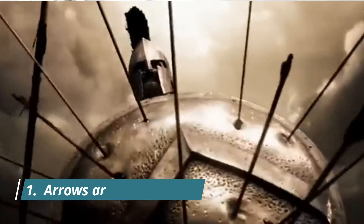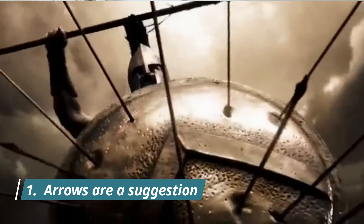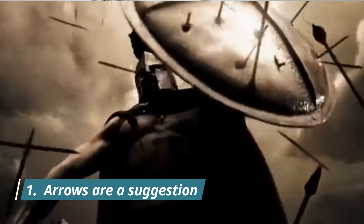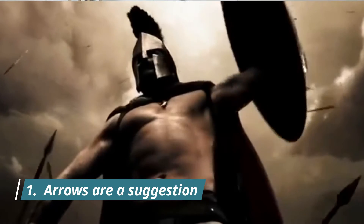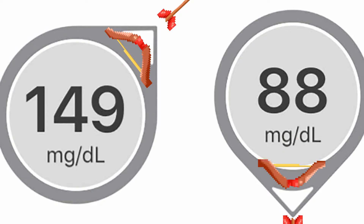If you're a Dexcom user, you may have noticed that your life has become saturated by arrows — not those arrows, these kinds of arrows. The kinds of arrows that show you what your milligram per deciliter or millimoles should expect to be within a certain amount of time.